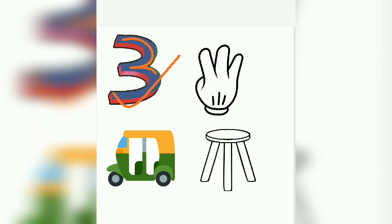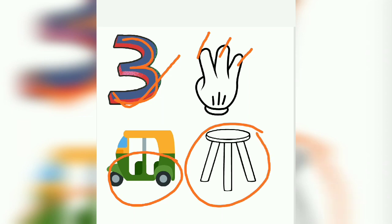This is number three. Half circle, half circle, three. Count on fingers. One, two, three. Rickshaw has three tires and this stool has three legs. One, two, three. So this is our number three.